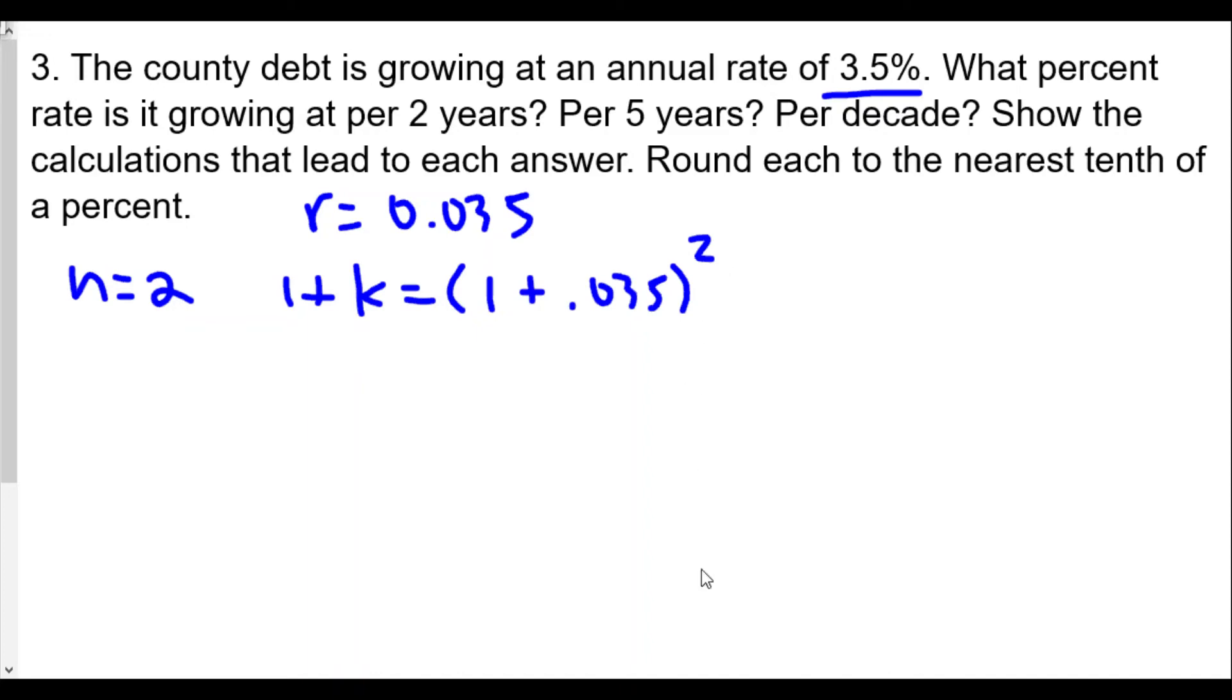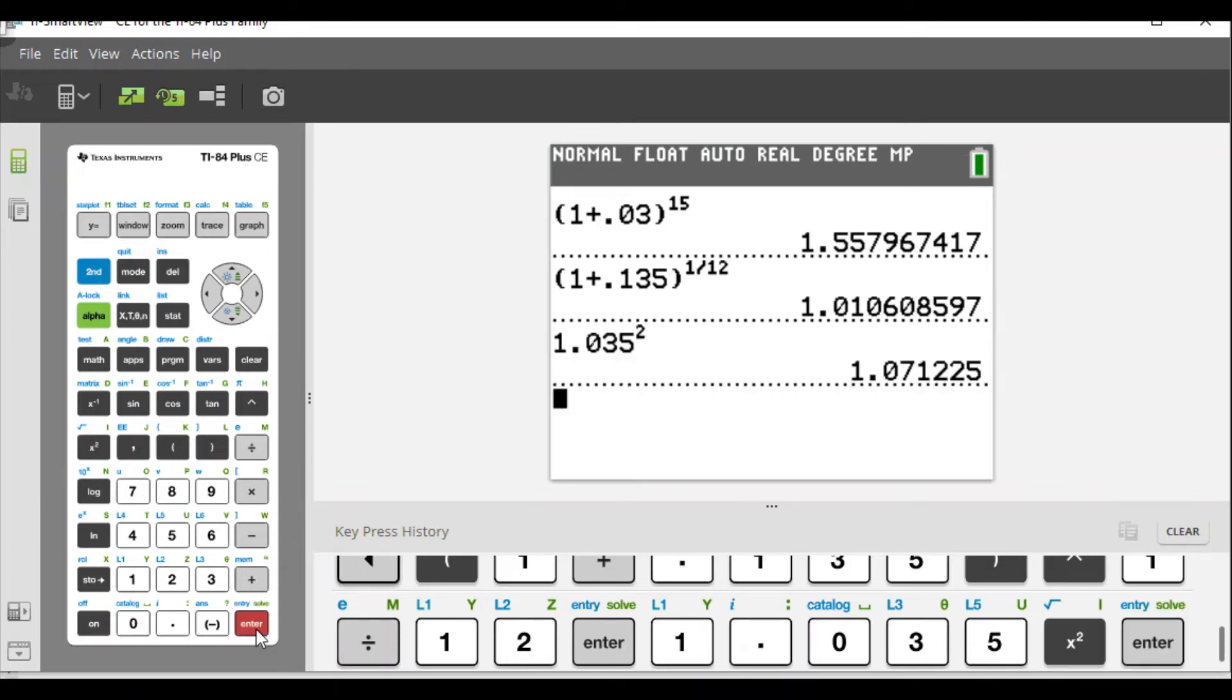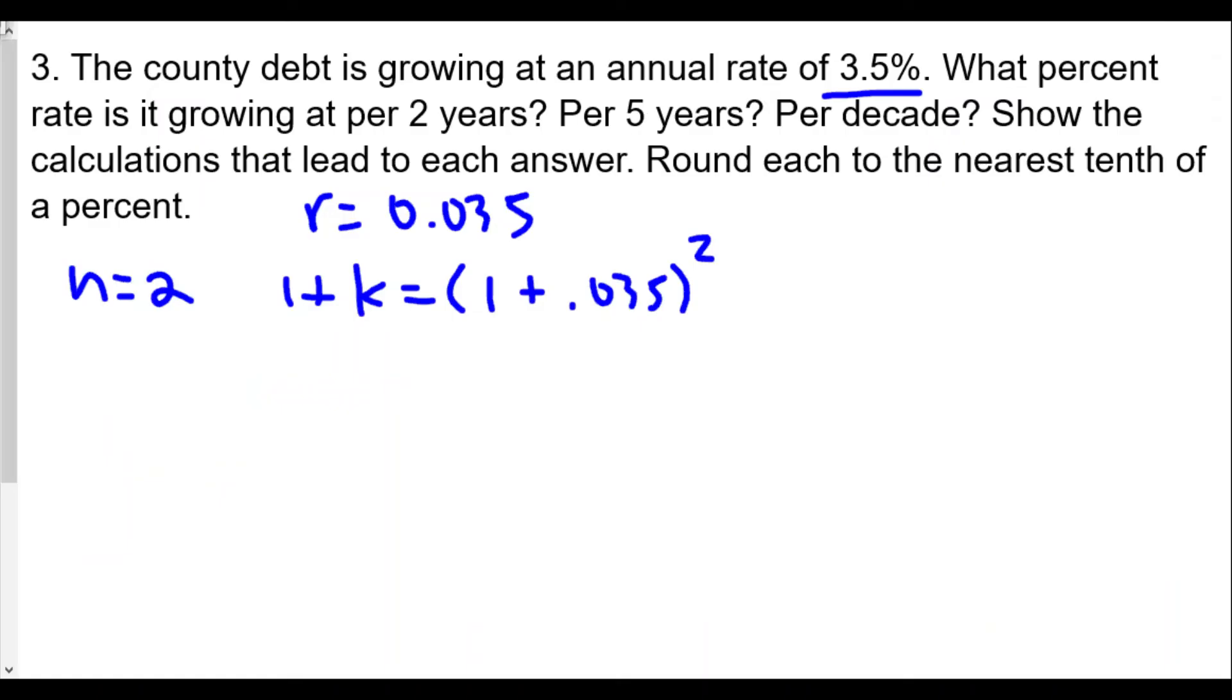And of course, we'll get 1.035 squared. So 1.035 squared. And we're going to get, in this case, 1.071225. So that becomes 1 plus k equals 1.071225. I'm going to subtract 1 from both sides. And so here, k is equal to 0.071225. And we do a decimal slide of 2. Now, it asks for the nearest tenth of a percent. So it looks like when n equals 2, the growth rate is 7.1%.